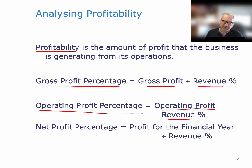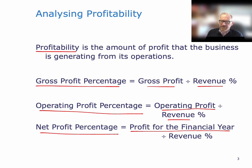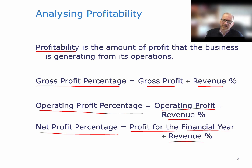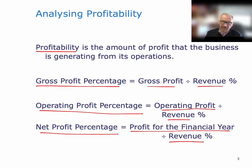And then the net profit percentage — that's what most people would call the bottom line. It's the profit for the financial year after paying all expenses, including tax and interest, which are the two that are not in the first two ratios. So tax and interest are included here, and that gives you a measure of the amount of profit that's been generated after paying all your expenses.